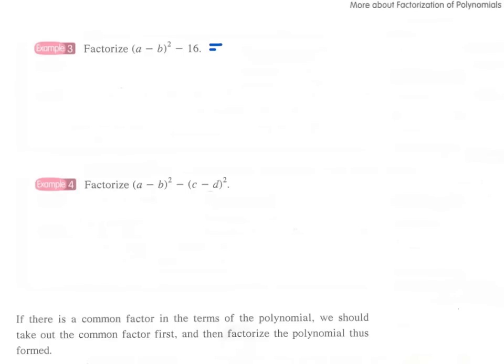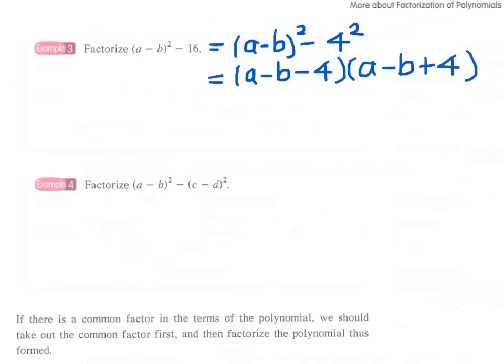Nevertheless, we can simply apply the method of difference of two squares. We can write the expression as the square of a minus b minus the square of 4. Therefore, we have a minus b minus 4 times a minus b plus 4, and we have to check that there are no further factors.